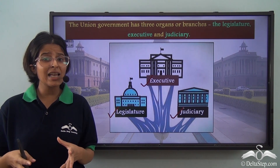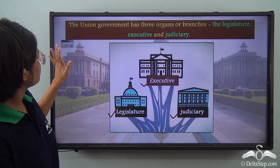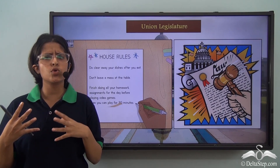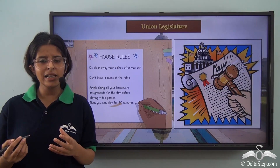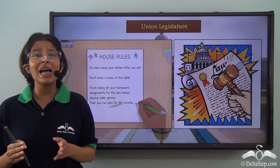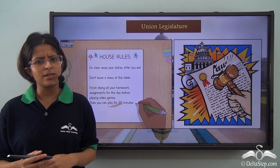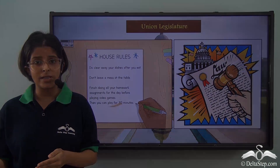Just like we have organs of our body that make our survival possible, these bodies together make the working of the government possible. Now when we stay at home or go to school, we have to follow certain rules and decorum — waking up at a certain time, eating together with the family, going out at specified times, wearing uniforms, talking politely to teachers and classmates, and attending all classes. Just like that, the government has rules or laws.